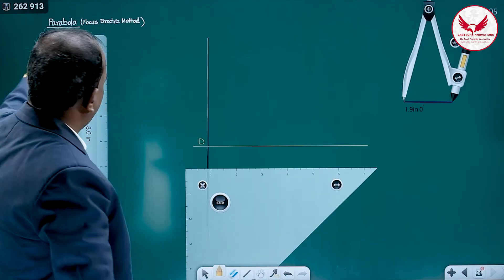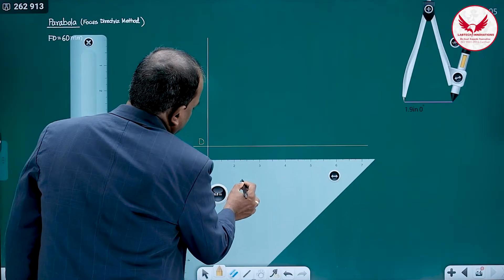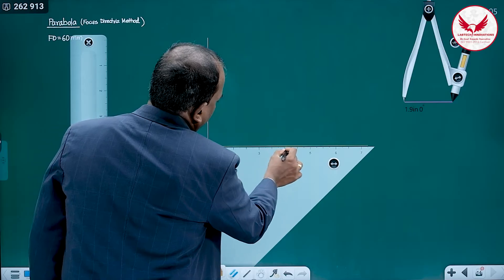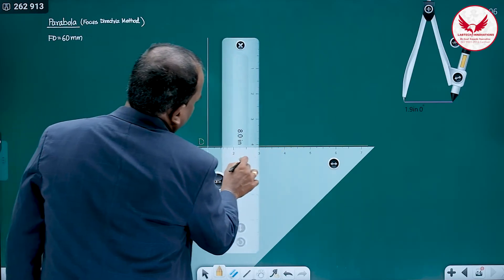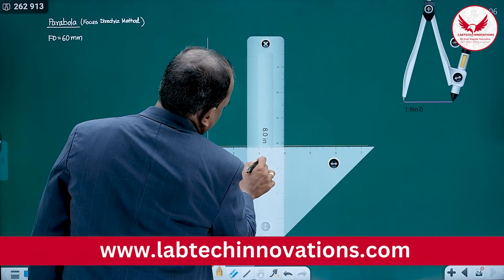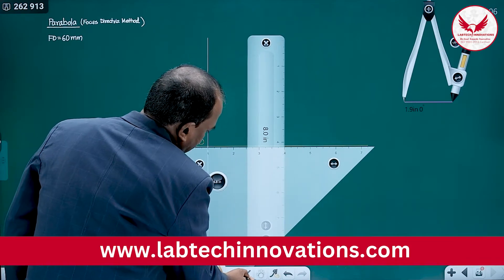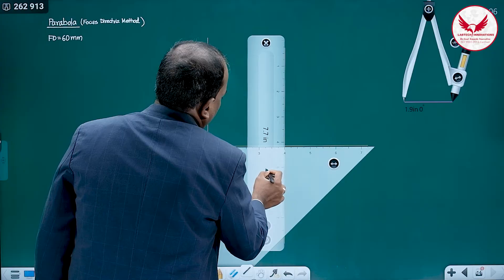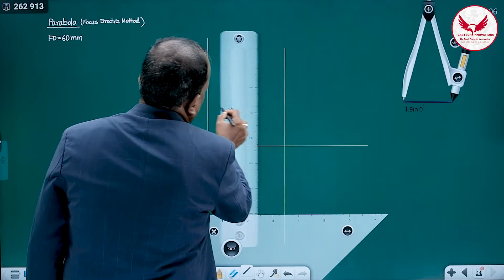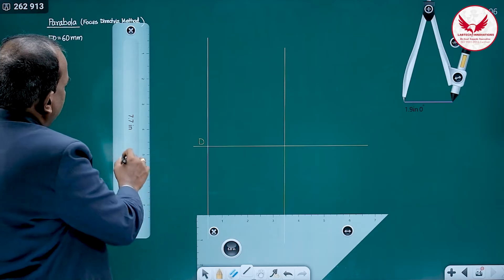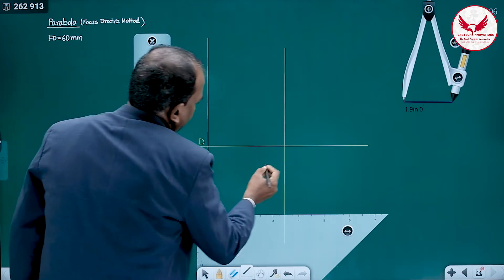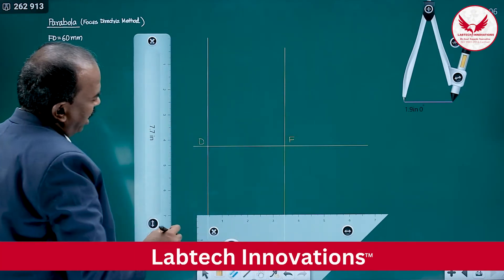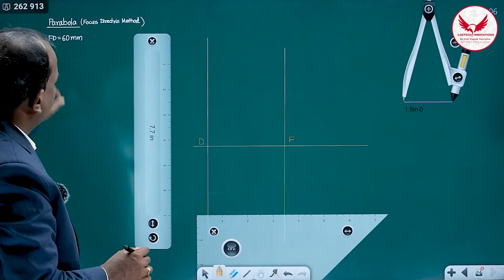Intersection of these two lines is going to be D. From this mark the distance equal to 60 mm. From the directrix mark distance equal to 60 mm: 20, 40 and 60. At a distance of 60 mm draw the vertical line. This is the initial part of the parabola. This focus to directrix distance is 60 mm.